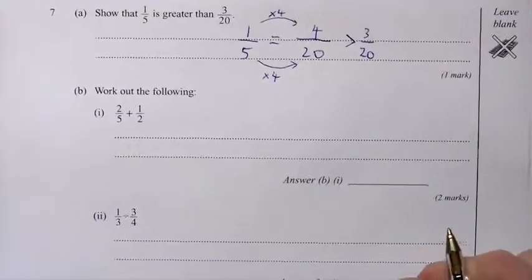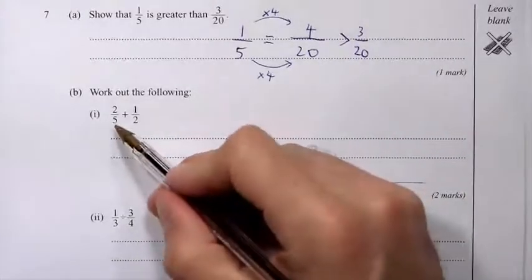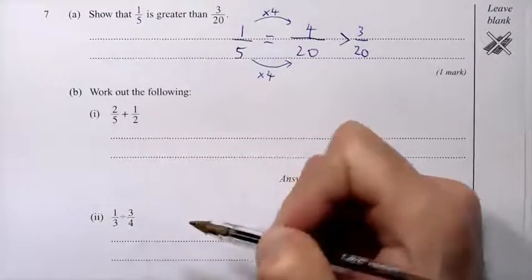Okay, part B. Work out the following. 2 fifths plus 1 half. So when you're adding fractions, you need the same number on the bottom of both fractions.